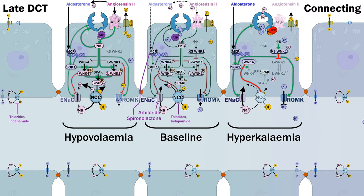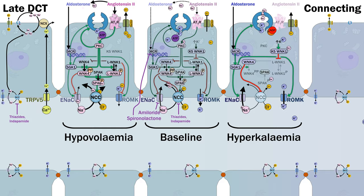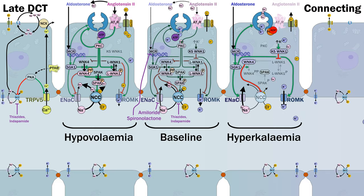Calcium ions are reabsorbed via the TRPV5 channel on the apical membrane and shuttled across the basolateral membrane via the sodium-calcium exchanger NCX, driven by the basolateral sodium gradient with the sodium recycled by the nearby sodium-potassium ATPase. If there's an influx of sodium from the NCC transporter, this competes and reduces the driving force for calcium absorption. As a result, thiazides have the unique effect of increasing calcium reabsorption. Physiologically this process is regulated by parathyroid hormone, which activates a Gα-S-type GPCR, upregulating TRPV5 and inhibiting NCC to promote renal conservation of calcium.